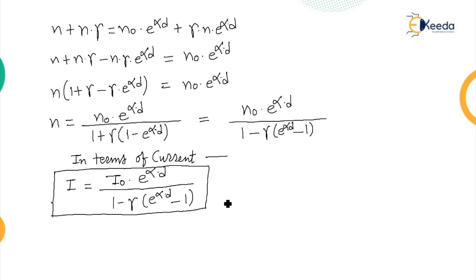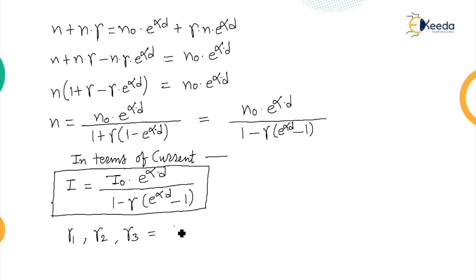In practice, positive ions, photons, and metastable particles — all three may participate in the process of ionization. Here we considered only one gamma, but if all three processes are included, they can be represented as γ1, γ2, and γ3, where the total gamma is γ1 + γ2 + γ3, and the above equation can be changed accordingly. That concludes this discussion — thank you.